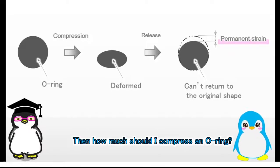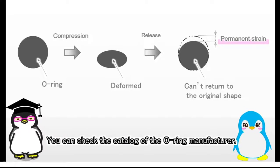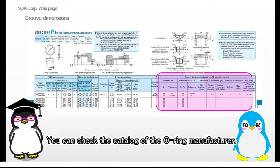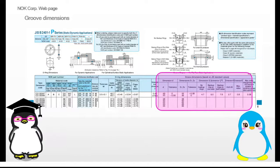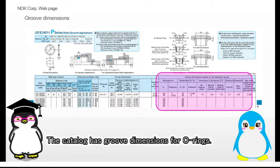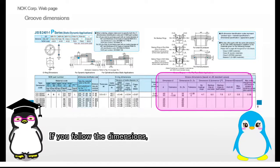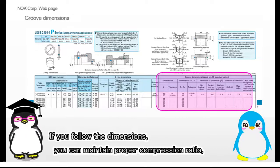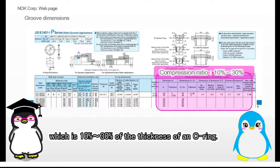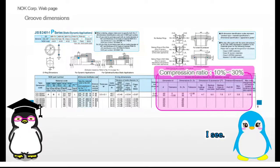Then how much should I compress an O-ring? You can check the catalog of the O-ring manufacturer. The catalog has groove dimensions for O-rings. If you follow the dimensions, you can maintain proper compression ratio, which is from 10% to 30% of the thickness of an O-ring.